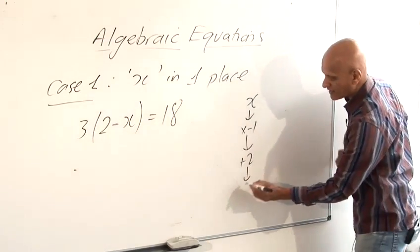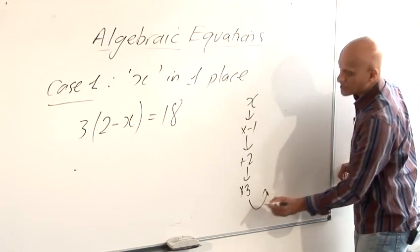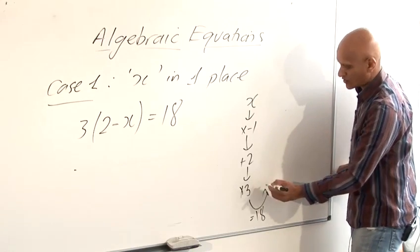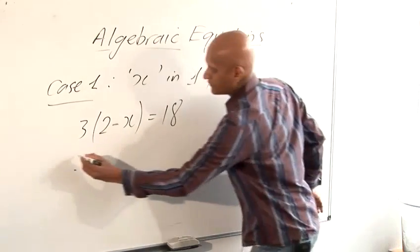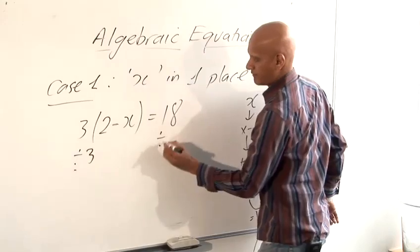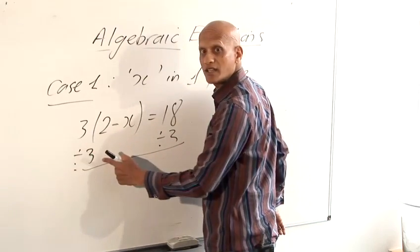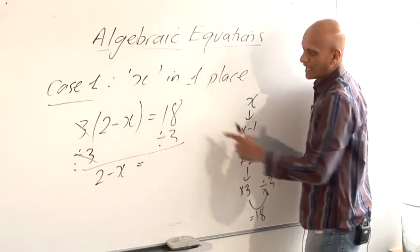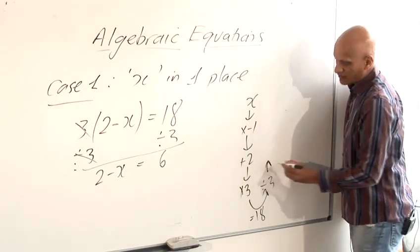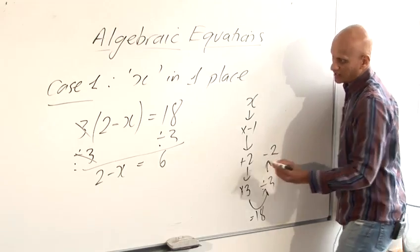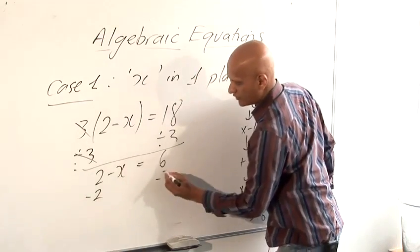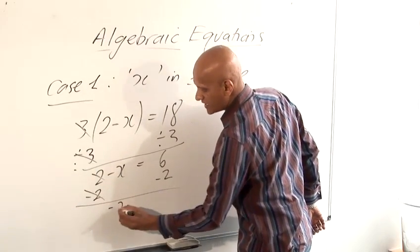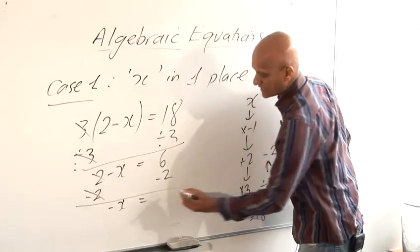Now there's a times 3 outside the brackets. Then we're up to the equals sign. And so now we want to reverse those steps. The opposite of times 3 is divided by 3. And on this side, the times 3 and the divided by 3 cancel each other out. So we're just left with 2 minus x. And 18 divided by 3 is 6. Opposite of plus 2 is minus 2. Minus 2 from both sides. Again, the plus 2 and the minus 2 cancel each other out. So we're left with minus x is 4.